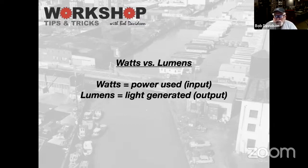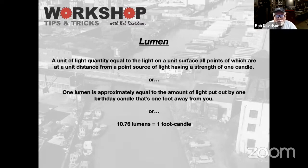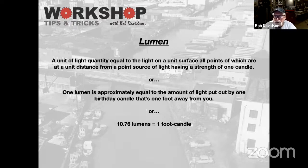Watts basically means nothing now. It's the power used when you turn on the light. Lumens, however, are the light that is generated from a bulb or a lamp, depending on how you want to call it. A lumen is a unit of light quantity equal to the light on the unit surface. Basically, one lumen is a birthday candle that's one foot away from you. And if you want to get real technical, 10.76 lumens equals one foot candle.